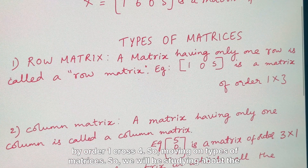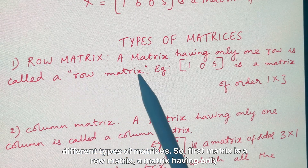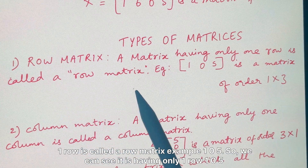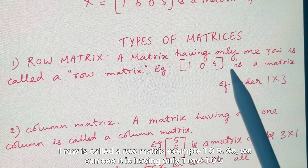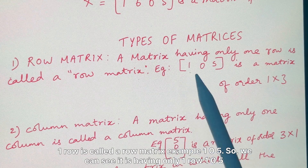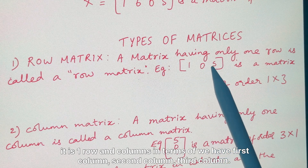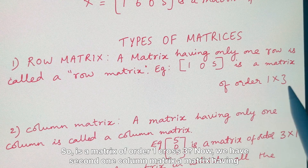Now we look at the different types of matrices. The first type is a row matrix — a matrix having only one row is called a row matrix. For example, [1 0 5] has one row and three columns, so it is a matrix of order 1 cross 3.